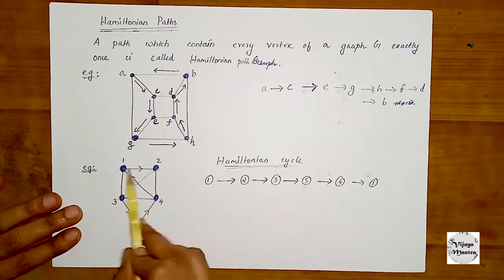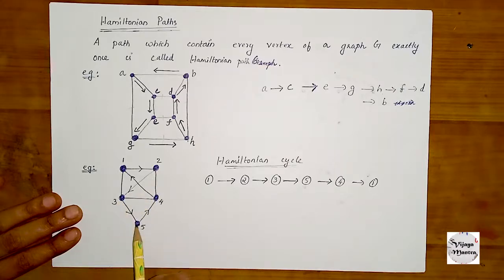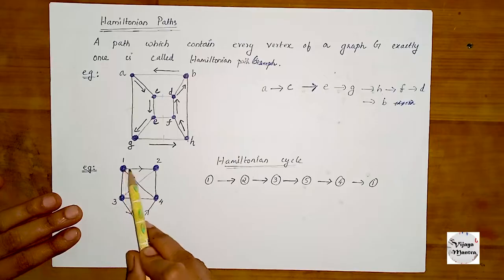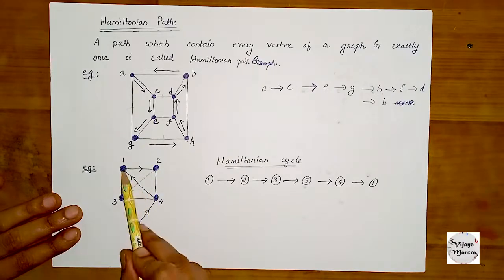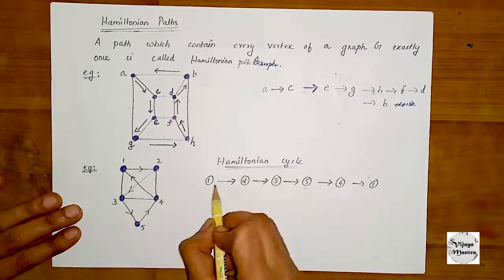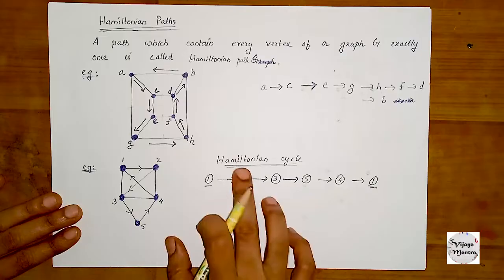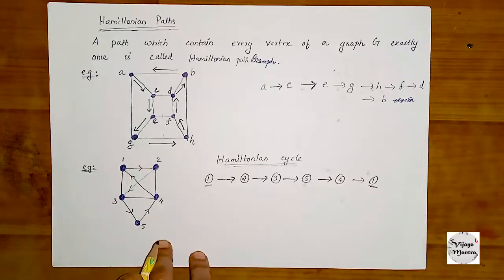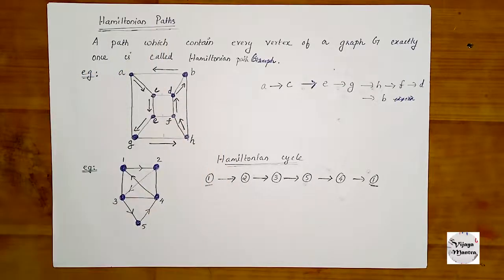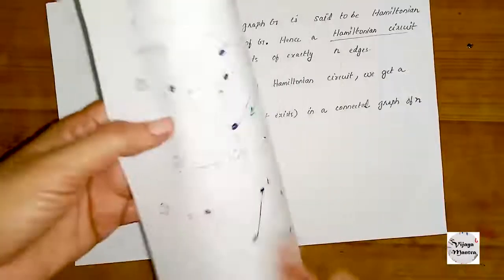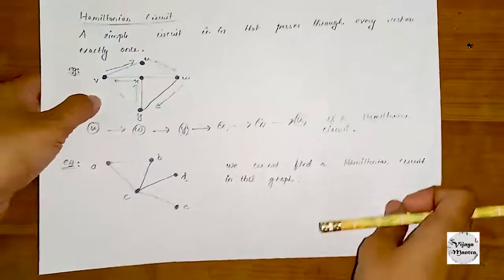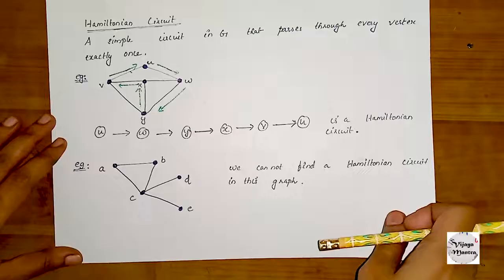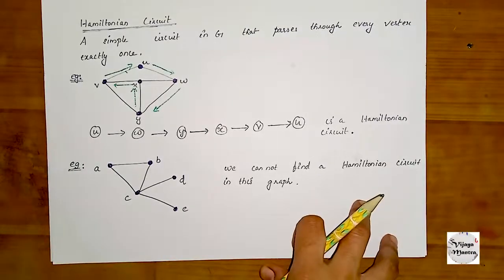We are going to go to the Hamiltonian cycle: 1 to 2, 2 to 3, 3 to 5, then 5 to 4, then 4 to 1. When all vertices are visited and we return to the start, it is called a Hamiltonian circuit — a circuit that passes through every vertex exactly once.